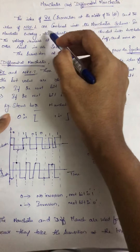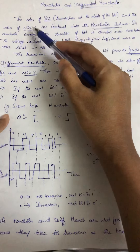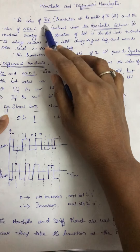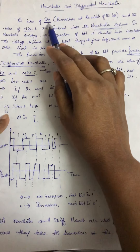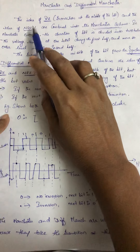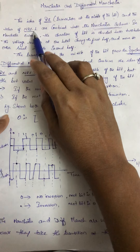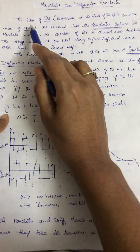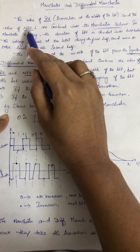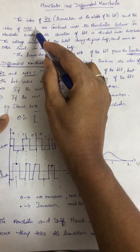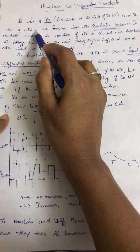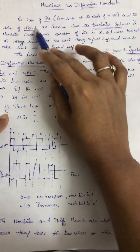What is Manchester? The combination of RZ and NRZ level forms the Manchester scheme. RZ means Return to Zero, where the transition must be taken only in the middle of the bit. In the previous video we discussed about NRZ — unipolar, polar — and in polar NRZ we have NRZ level and NRZ inversion. Here NRZ level and RZ form the combination to create the Manchester scheme.